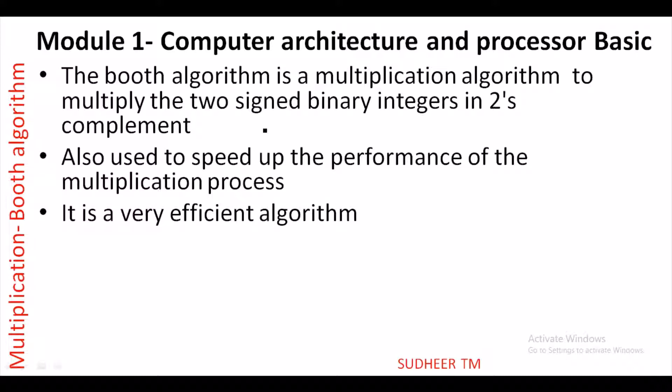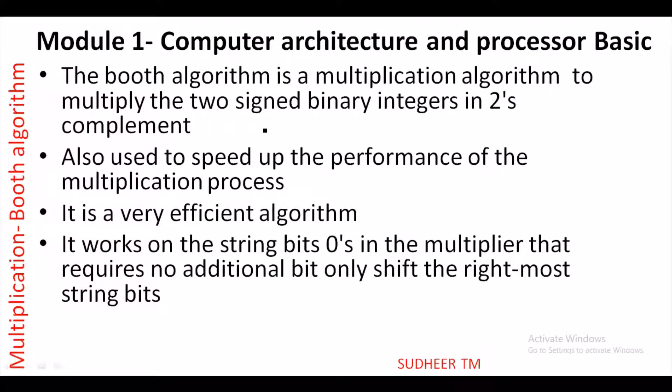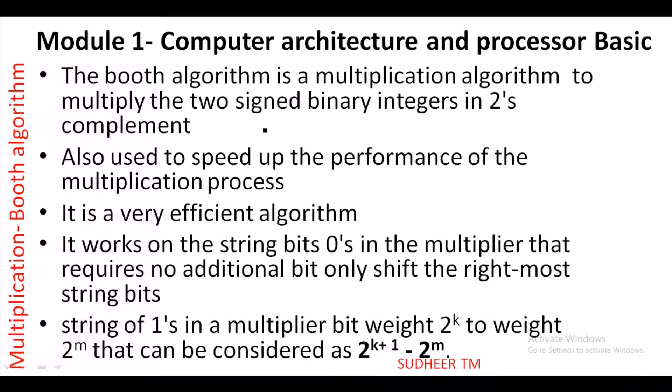Compared to array multiplier, Booth algorithm works on strings of zeros in the multiplier that require no additional bit — only shift the rightmost string bits. So if there is a series of zeros in our multiplier, the multiplication process becomes easy. Only the accumulator partial product needs to be shifted right. This is an important point: if there is a series of ones in the multiplier bits.